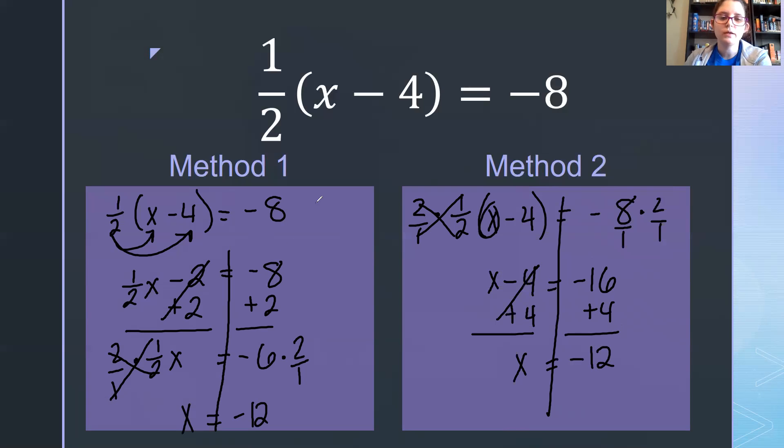So when we use method one, we distribute, we undo our addition and subtraction, and then we undo our multiplication or division. That turns this supposed two-step equation into a three-step equation. And my problem with extra steps is there's more chances for you to make a mistake.